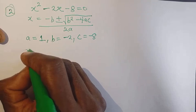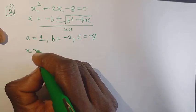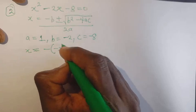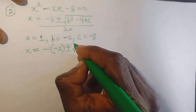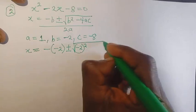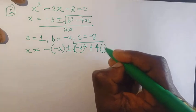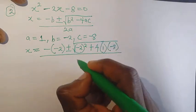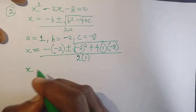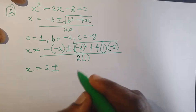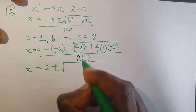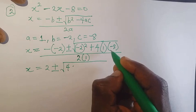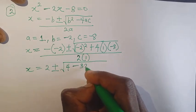Substituting into the formula: x equals to minus b — and remember b is negative, so minus of minus 2 — plus or minus root of minus 2 squared, minus 4 times a which is 1, times c which is minus 8, all over 2 times a which is 1. Minus times minus is plus, giving us 2 plus or minus root of 4 minus 4 times 1 times minus 8, which is minus 32.